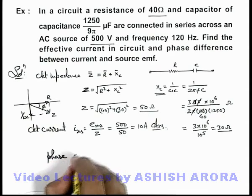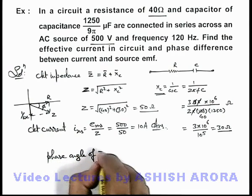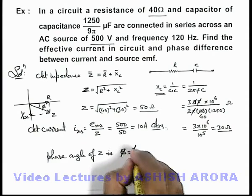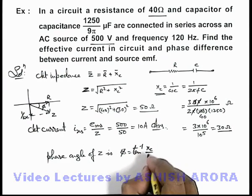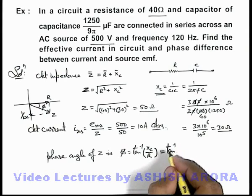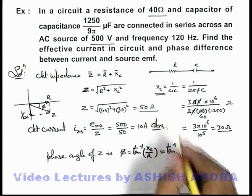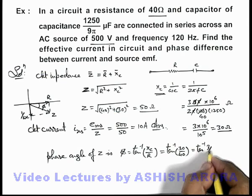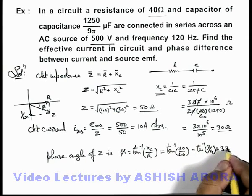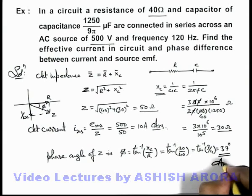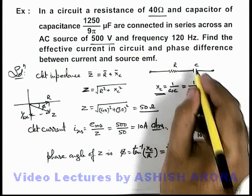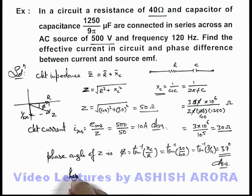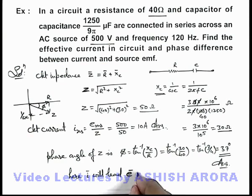We can directly write the phase angle φ = tan⁻¹(Xc / R). In this situation, Xc is 30 and R is 40, so φ = tan⁻¹(30/40) = tan⁻¹(3/4), which has a value of 37 degrees. Therefore, due to the capacitive component in the circuit, the current phasor will lead the EMF phasor by 37 degrees. This is the answer to this problem.